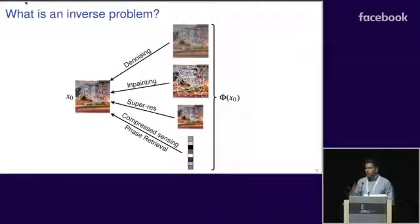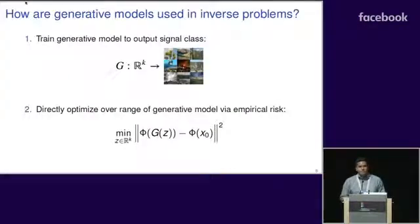How exactly are we going to use generative models to solve these problems? We're going to use what's called a generative prior. A prior is our previous knowledge about the image of interest that we can exploit to recover it with fewer measurements. Under a generative prior, we want to find the image in the range of our generative model that best approximates our image of interest.